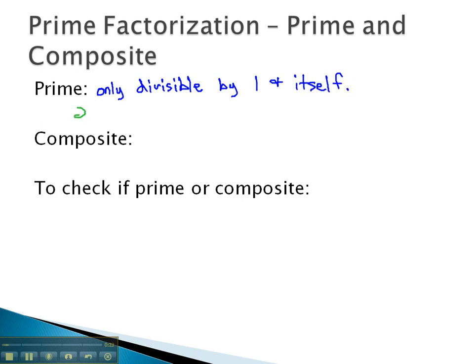For example, the number 2 is a prime number because it's only divisible by 2 and 1. Some other prime numbers are 3, 5, 7, 11, 13, 17, and 19. Notice all these numbers are only divisible by 1 and itself.